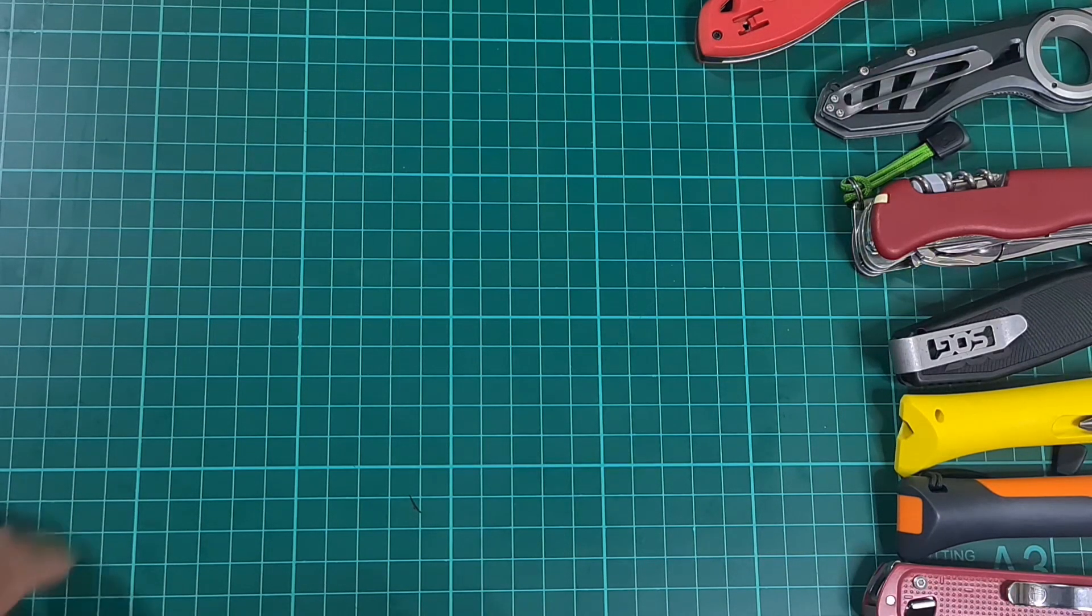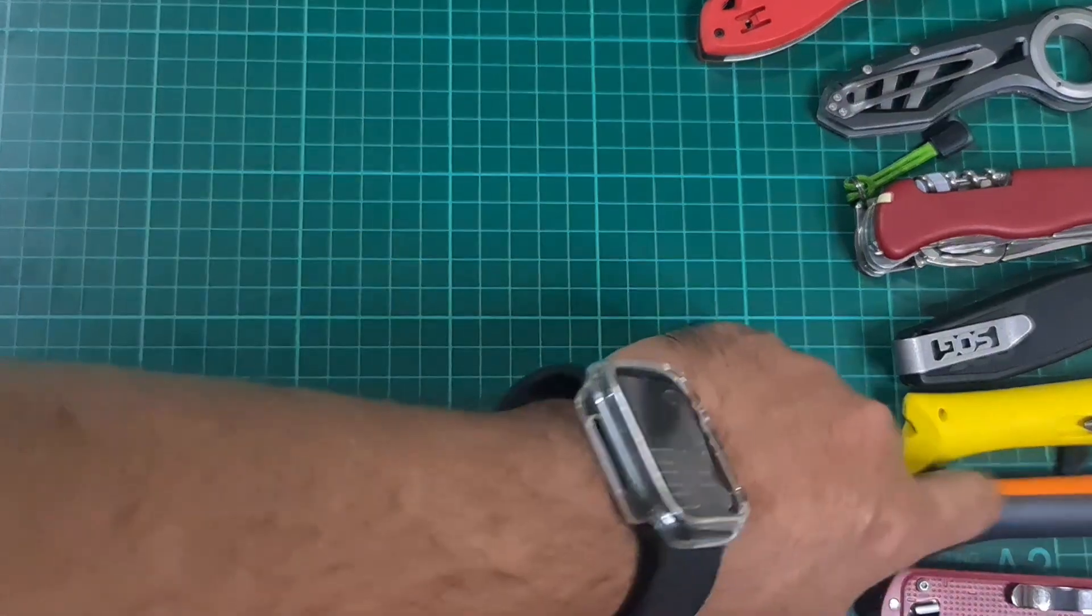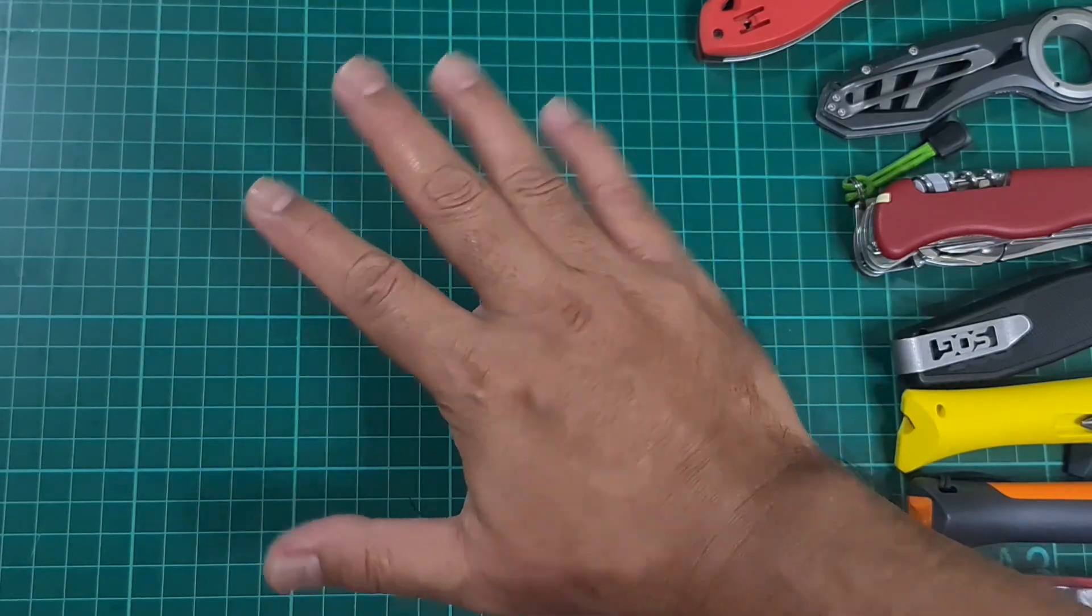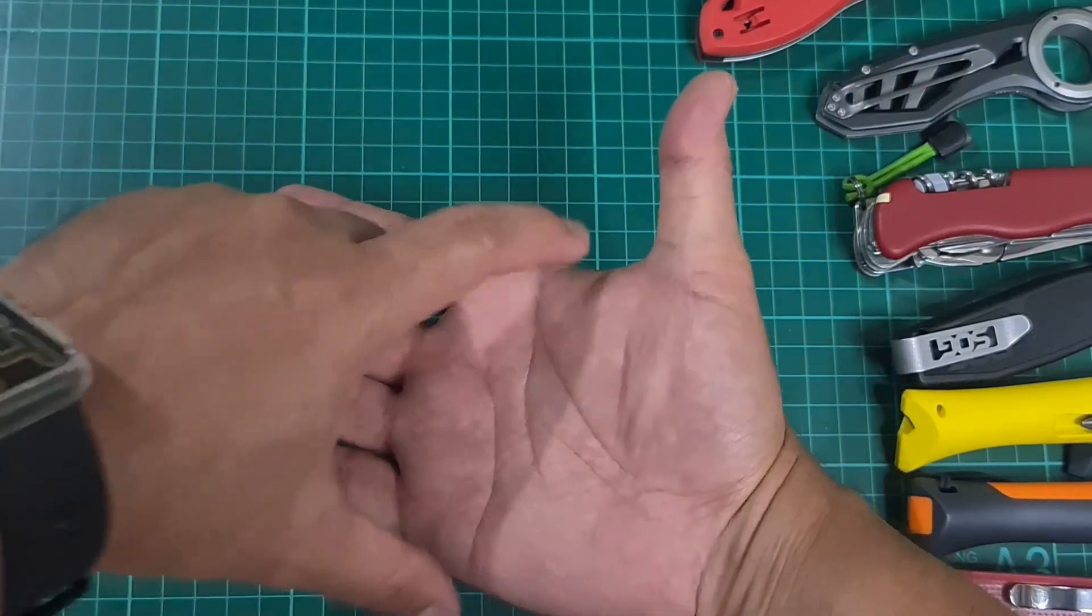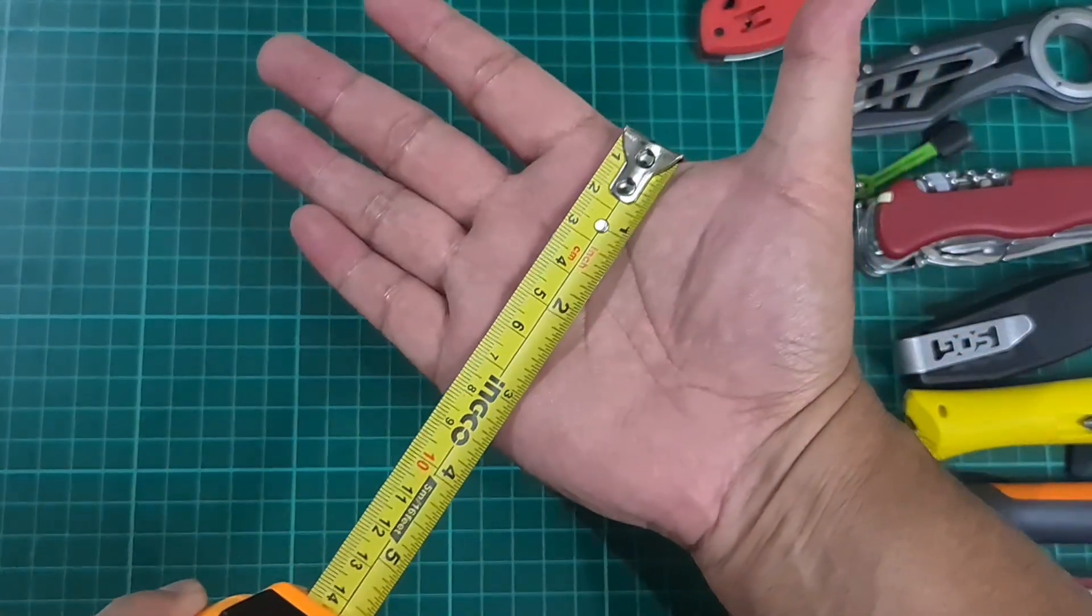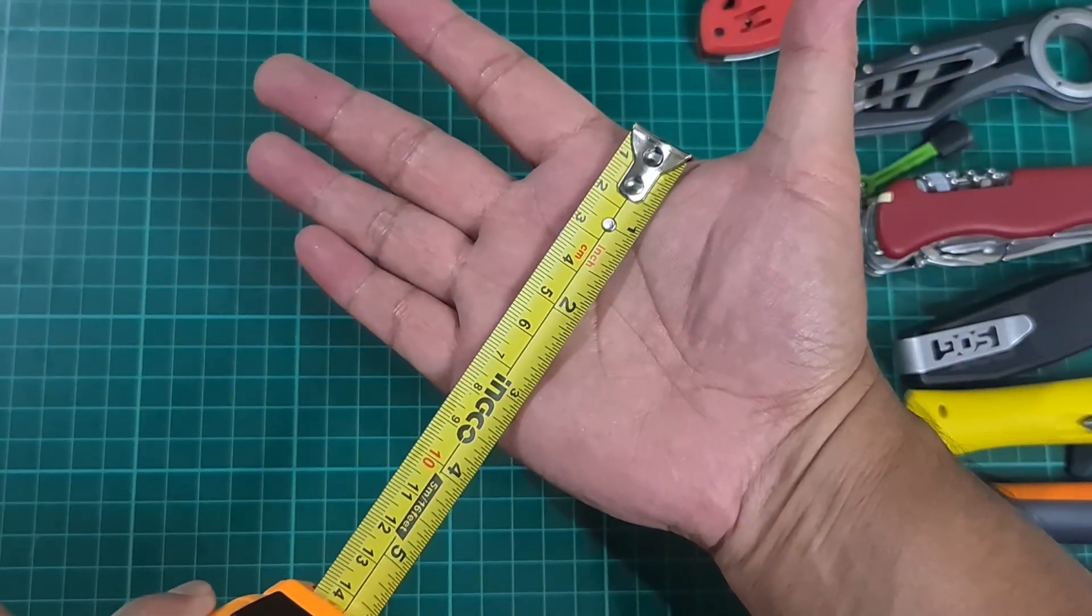Starting with my hand size, let's get that out of the way. Hand width is nine centimeters or three and a half inches wide.